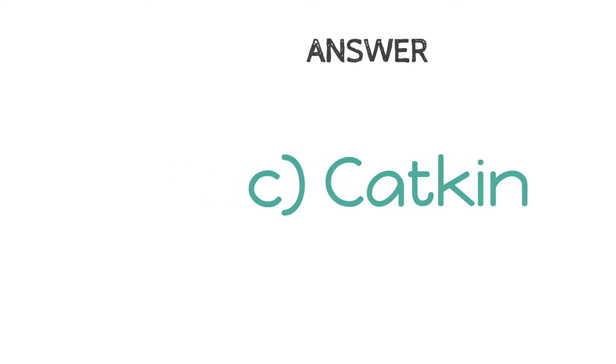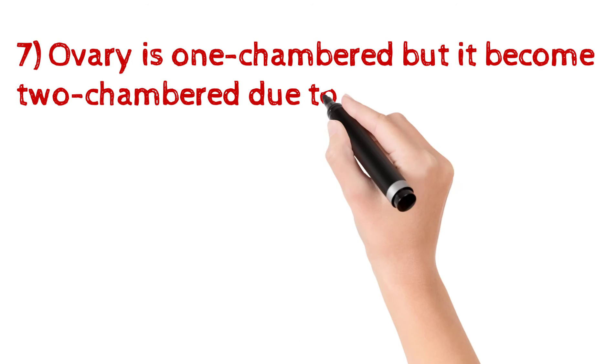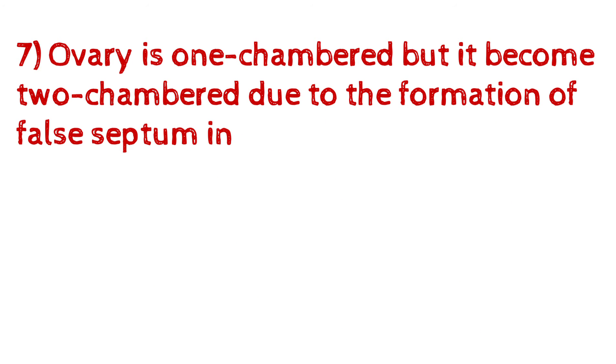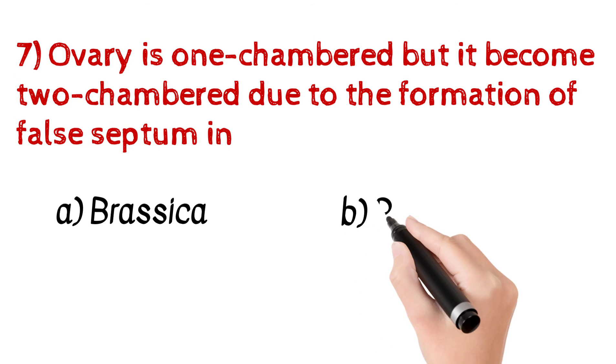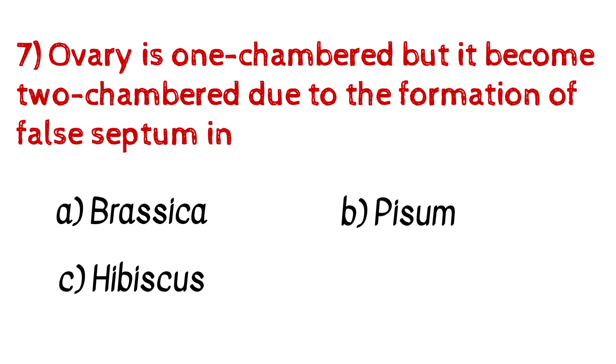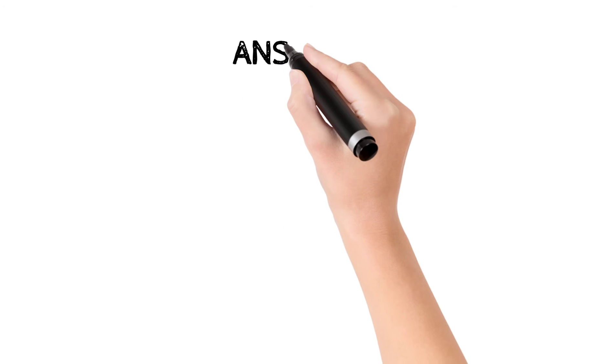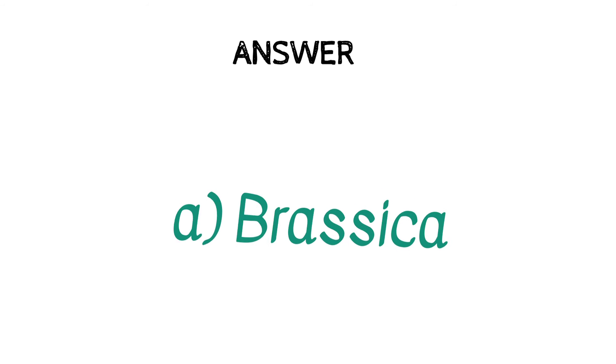Question number 7: Ovary is one-chambered but it becomes two-chambered due to the formation of false septum in A. Brassica, B. Pisum, C. Hibiscus, D. Dianthus. Formation of false septum, and the answer is A, Brassica.